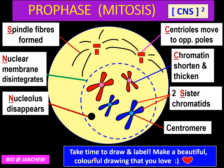Take time to draw and label this drawing. You need to know all the names of the structures like centrioles, centromere, and spindle fibers, as these are commonly asked in structured questions. Make a colorful drawing. For the chromosomes, you can color one black and leave the other one white.